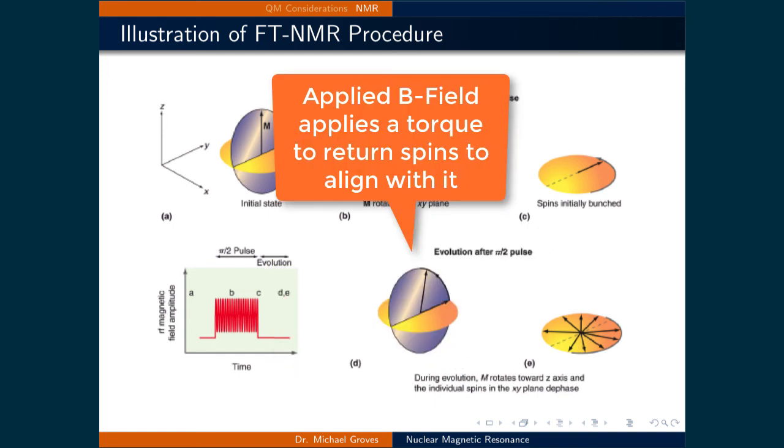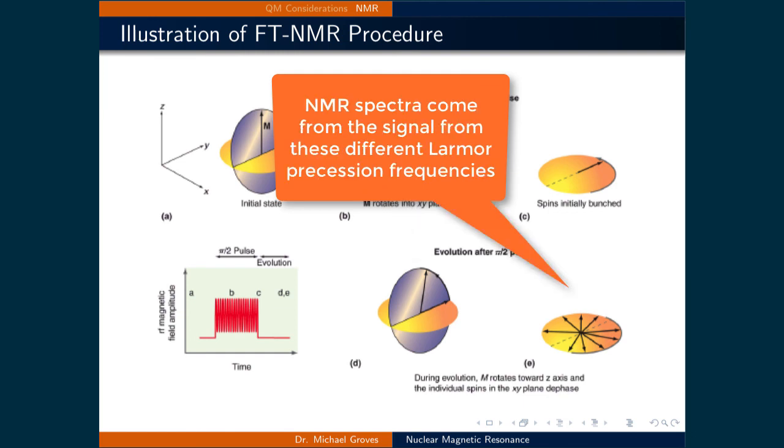Since the original magnetic field is still on, all the spins experience a torque, which will rotate them to point back along the direction of the main field pointing in the z direction. This is what's illustrated in image D. However, since all the nuclei may have different Larmor precession frequencies, then they will all precess at different rates around that main magnetic field.